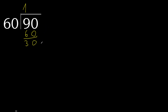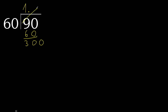There is no number, therefore always complete with 0 here. Point. 0 point. Ok, 300. 60 multiplied by 5 is 300.